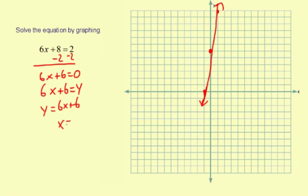So x equals negative 1 should be the solution to this equation 6x plus 8 equals 2. I'm going to go ahead and check it real fast just to make sure. So 6 and then negative 1 in for x plus 8 equals 2. Simplify. 6 times negative 1 is negative 6 and then plus 8 equals 2.